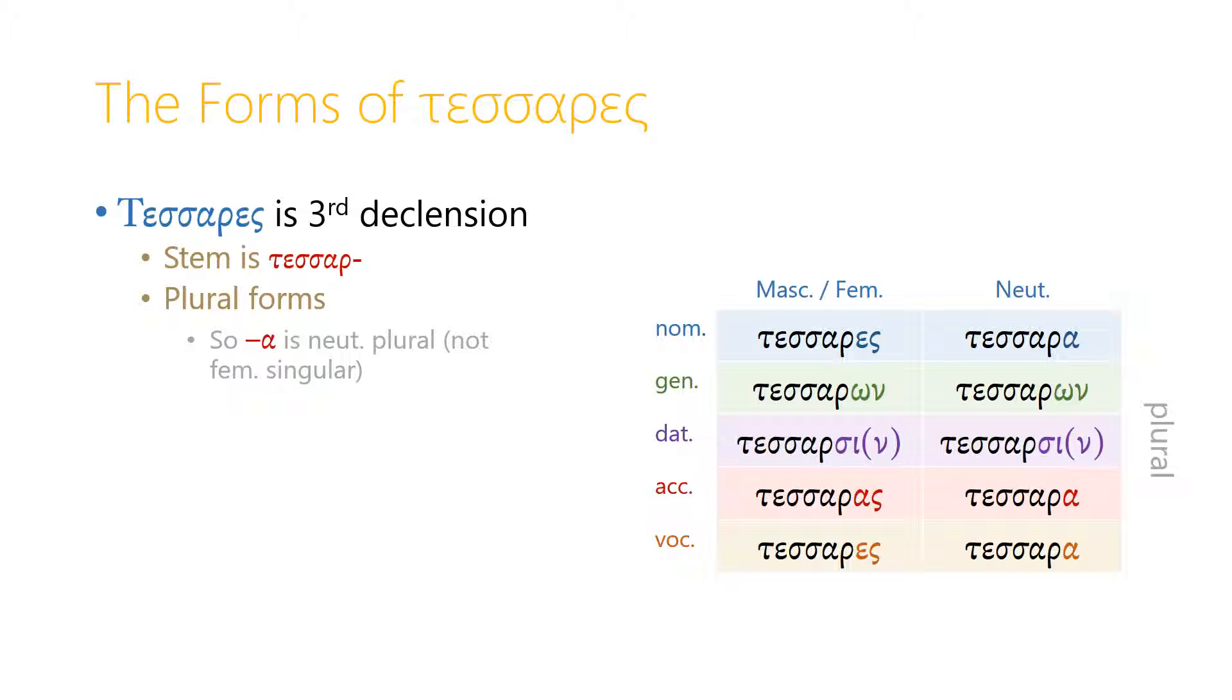Tesseres is another third declension adjective. The stem this time is tessar, and again we have quite regular plural forms. Tesseres, tessaron, tessarsin, tessaras, tessares in the masculine and feminine.